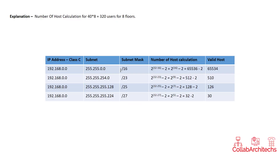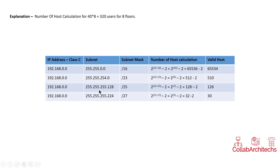To calculate the number of hosts, you use the formula 2 to the power of (32 minus the prefix). So for slash 16, that's 2 to the power of 32 minus 16. For slash 23, that's 2 to the power of 32 minus 23. For slash 25, that's 2 to the power of 32 minus 25.